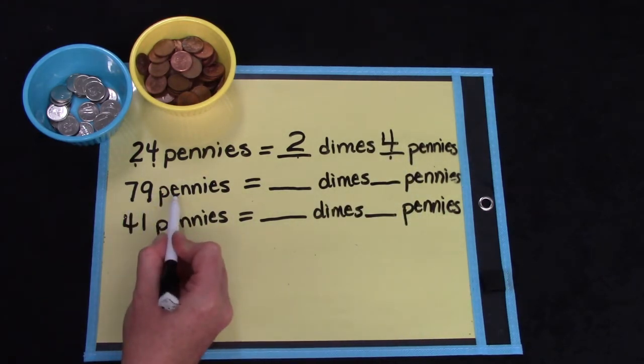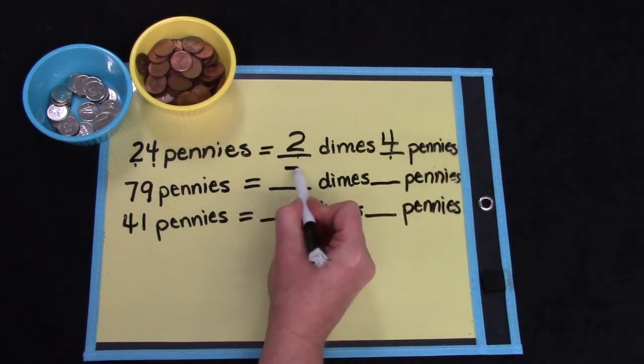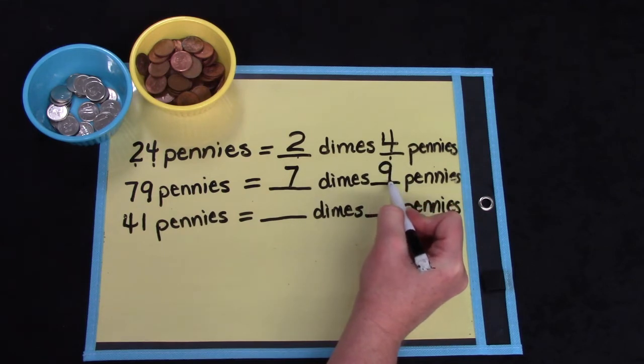For 79 pennies, how many dimes and how many pennies do we have? You're right. 7 dimes and 9 pennies.